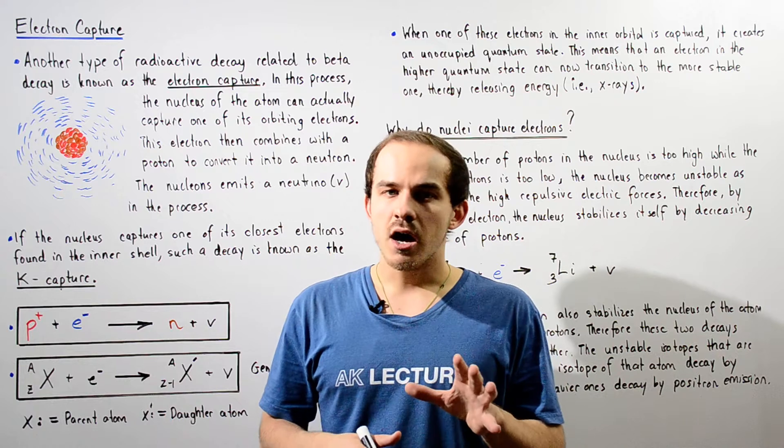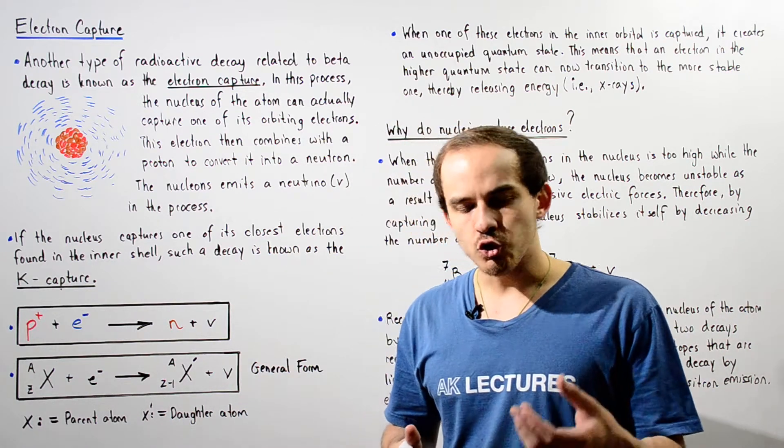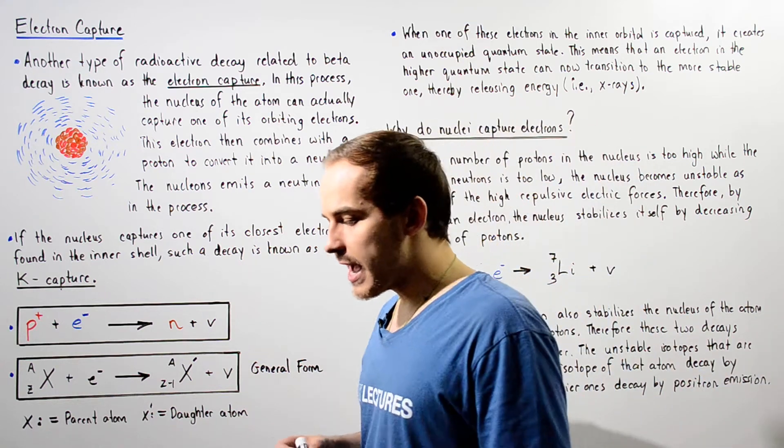Another type of radioactive decay that is related to beta decay is known as the electron capture.